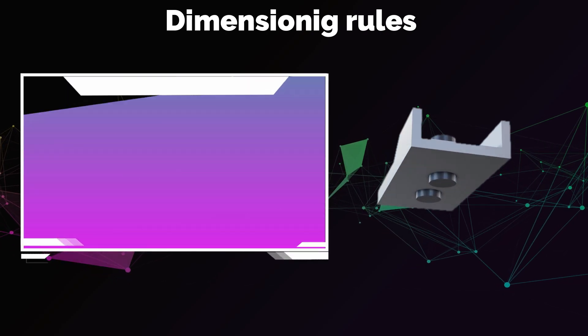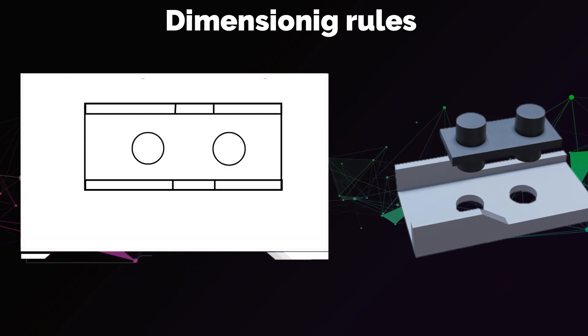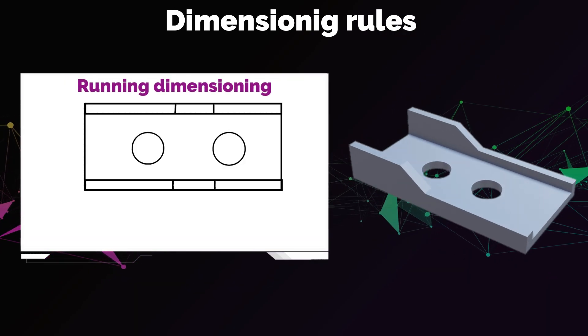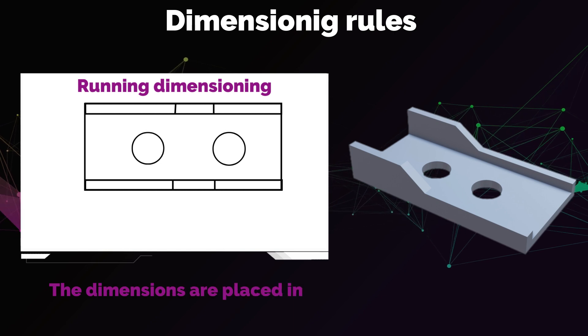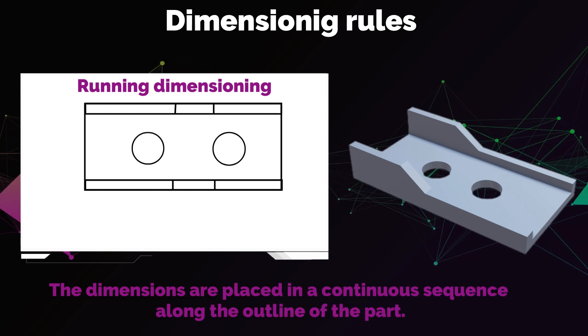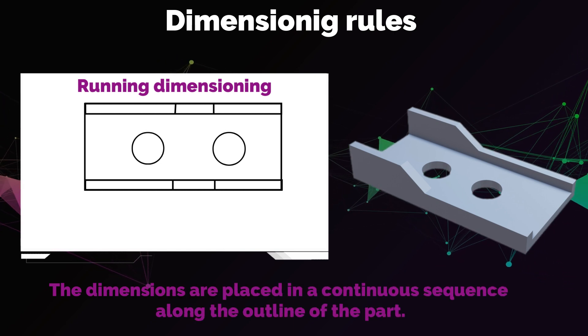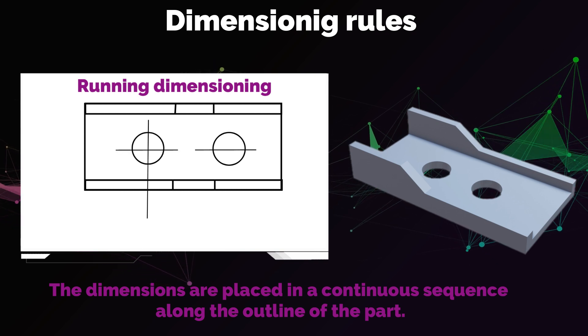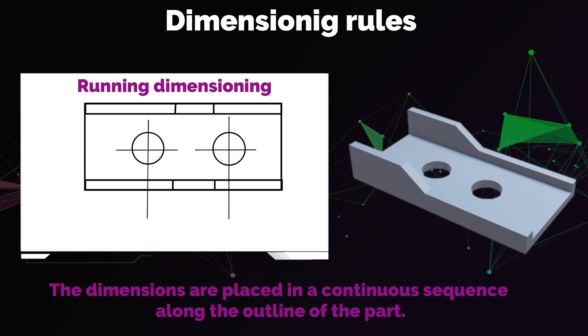The third method that we are going to talk about today is running dimensioning. In the running dimensioning, the dimensions are placed in a continuous sequence along the outline of the part. This method is commonly used for parts that have multiple features located at irregular intervals or locations.